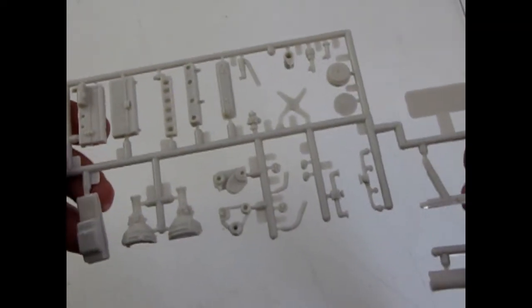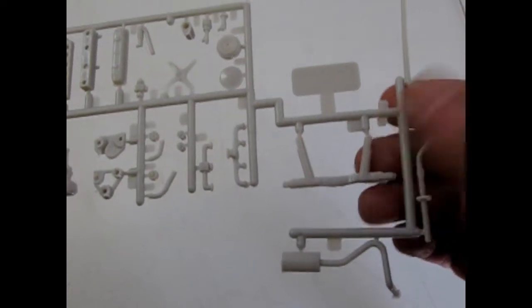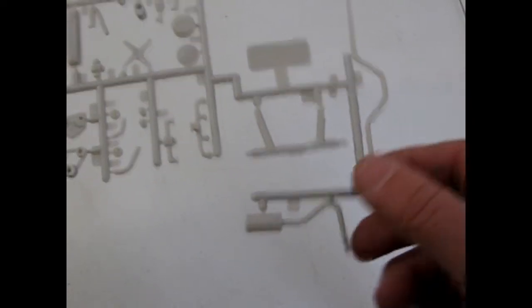And here is the Chevy inline six with some of the frame cross braces and the exhaust pipes.